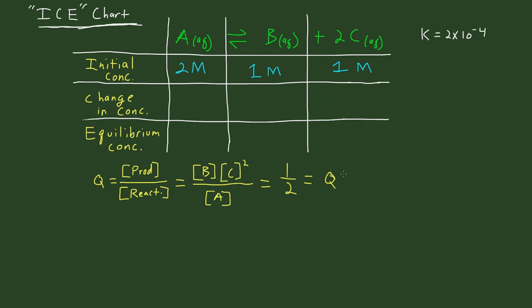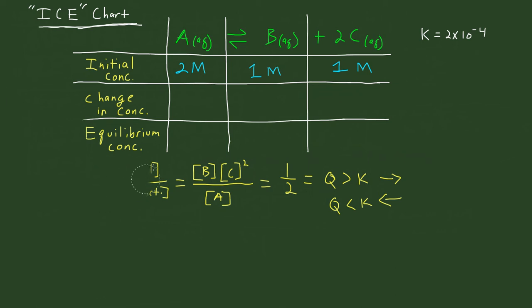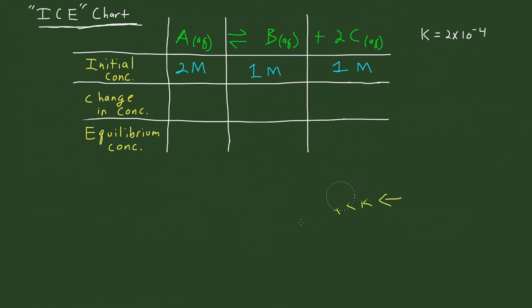Now this is the important part: you have to figure out whether Q is greater or less than K. In this case, 0.5 is greater than 2 times 10 to the negative 4, so Q is greater than K. If Q is greater than K, the reaction is going to go in the forward direction. If Q is less than K, the reaction goes in the reverse direction.